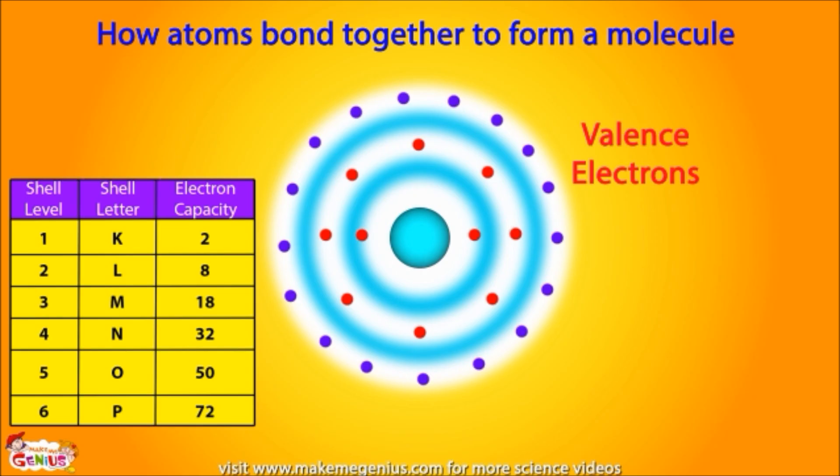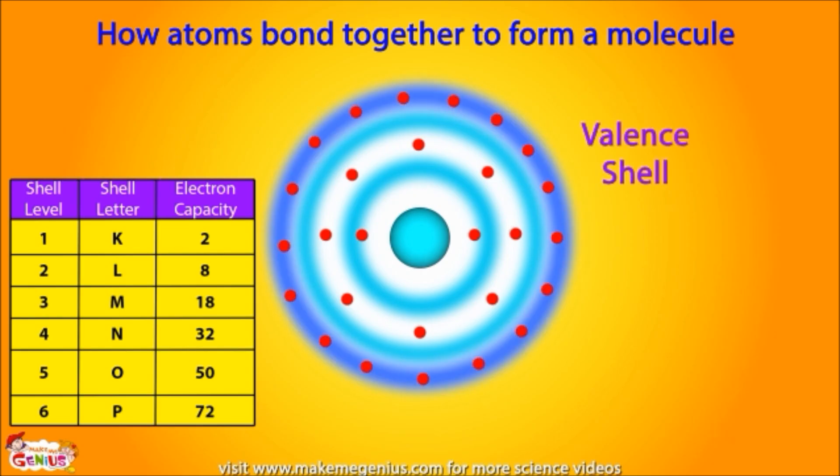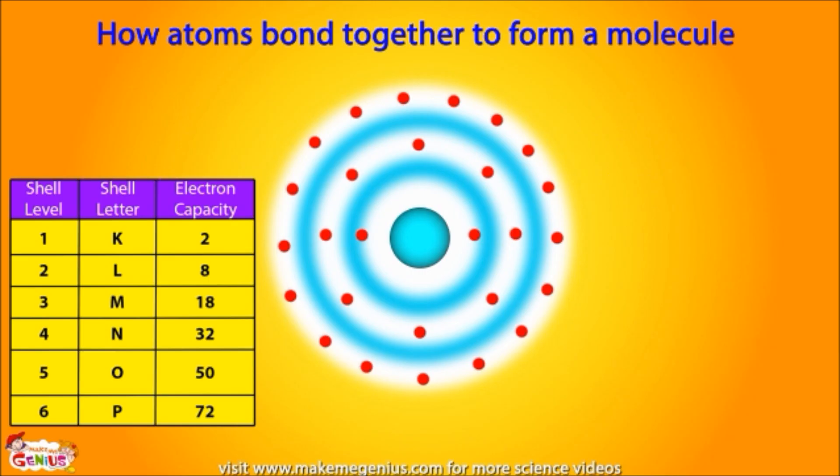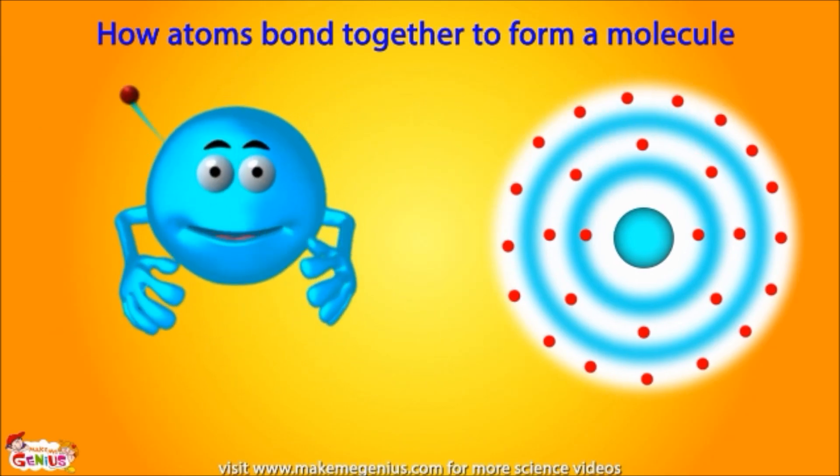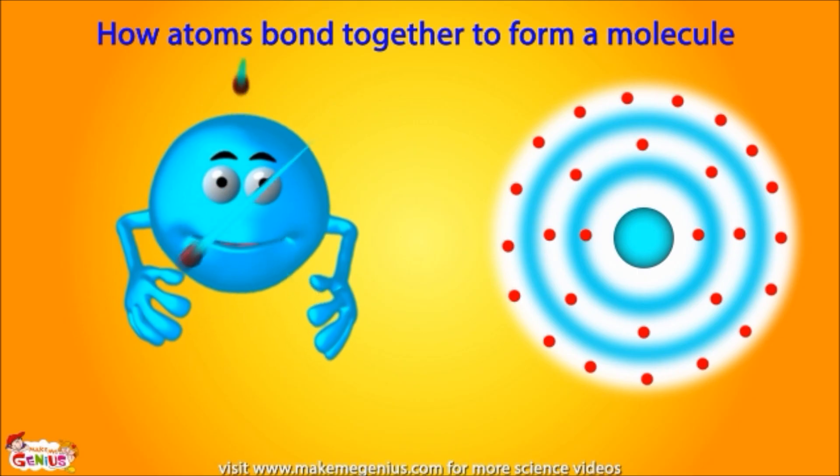The atoms in the outermost shell of an atom are called valence electrons and the outermost shell is called the valence shell. Atoms bond with other atoms to form a molecule with these valence electrons in the valence shell.